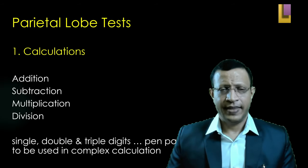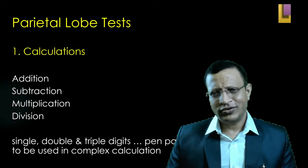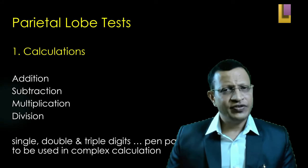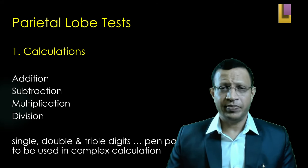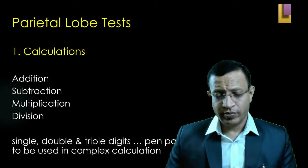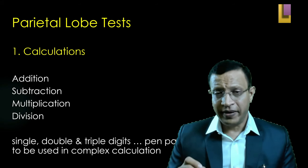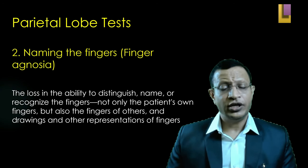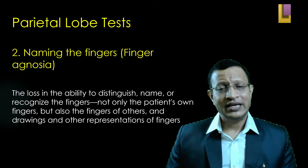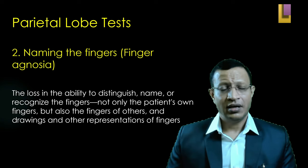For parietal lobe tests, first is calculation — give simple addition, subtraction, multiplication, and division. Start with single digit, then double digit. For complex calculations, provide pen and paper — do not insist on oral response, but do not provide a calculator. The second test is finger agnosia — if there is parietal lobe damage, the patient loses the ability to distinguish, name, or recognize fingers, not only his own but also the examiner's and even on drawings. To test: ask 'show me your right index finger,' 'show me your left index finger,' and also ask the patient to point to the examiner's right ring finger, remembering that the examiner is sitting opposite.